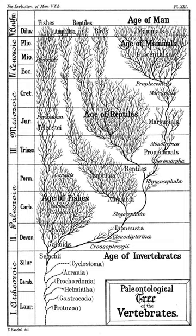In the 1880s, Auguste Weismann's experiments indicated that changes from use and disuse could not be inherited, and Lamarckism gradually fell from favor.